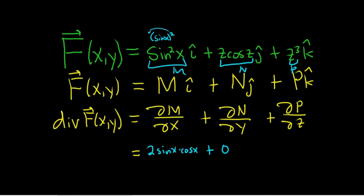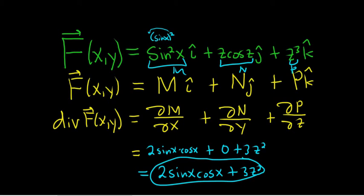And the derivative of P, well, that's going to be 3z squared. So the divergence of our vector field is 2 sine x cosine x plus 3z squared. And that's it.